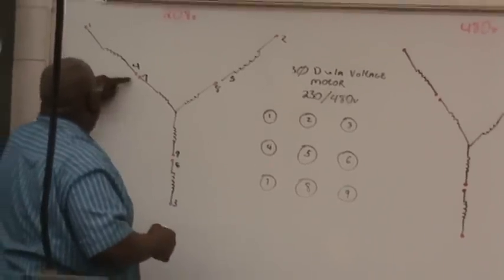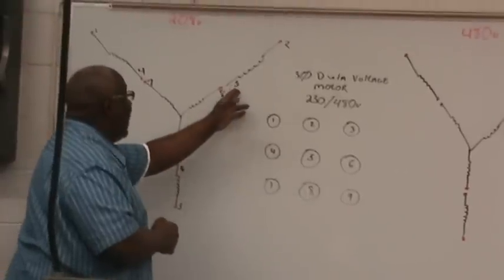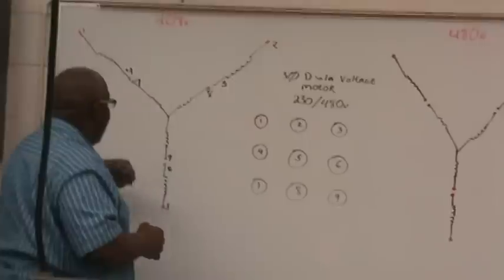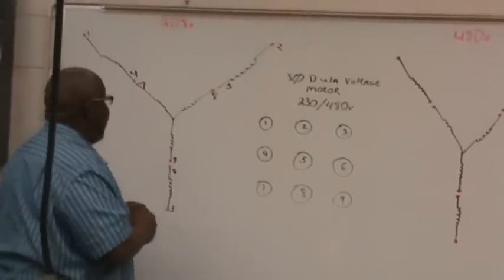One to four is a winding. Two to five is a winding. Six to three is a winding. Seven, eight, and nine are connected together in the center here.